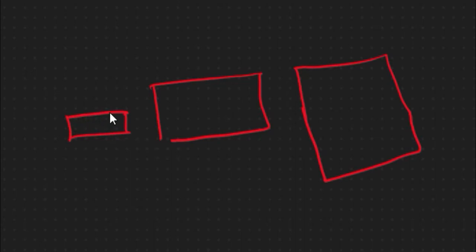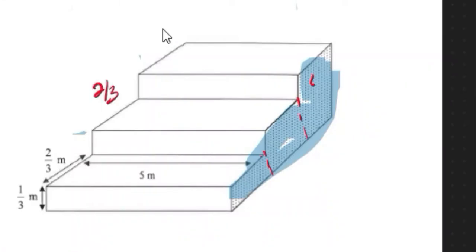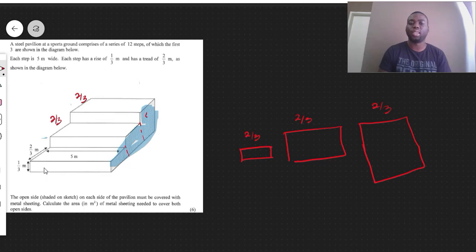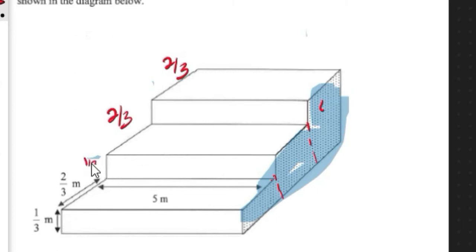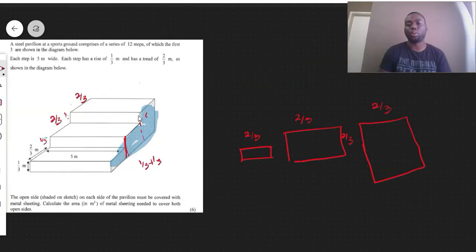The top part here would represent the tread which is 2 over 3. Now they tell you again that there's a rise of 1 over 3 meaning that each step is increased by 1 over 3. There's an extra 1 over 3 for every single step. So this is 1 over 3, from here to here is also 1 over 3, and from here to here is also 1 over 3. However if I'm looking at the entire distance it should be 1 over 3 plus 1 over 3 which would make this here 2 over 3.